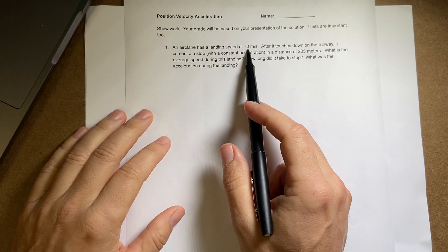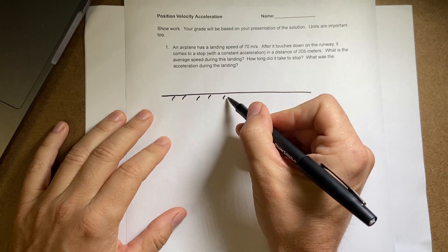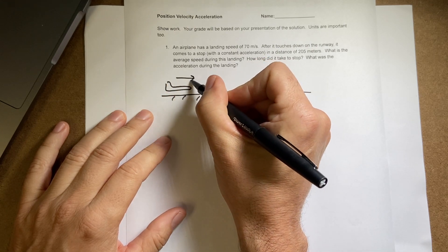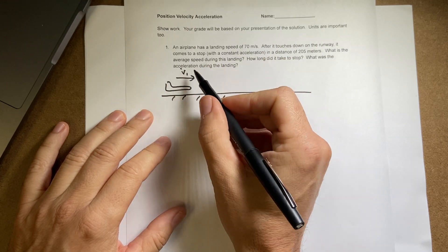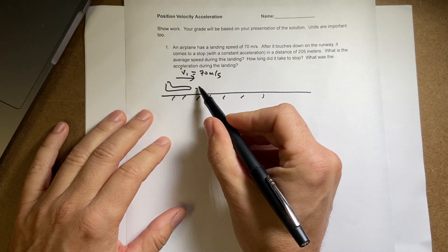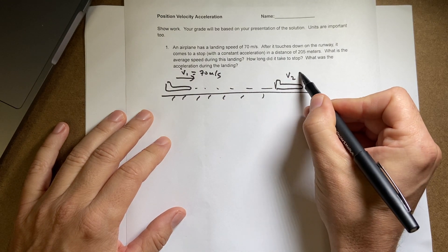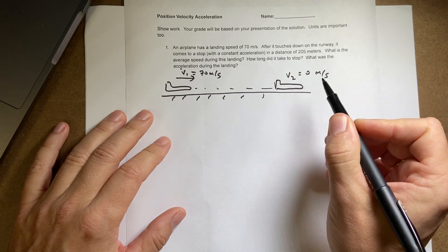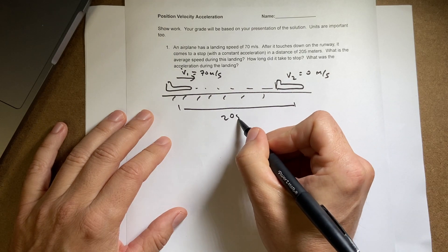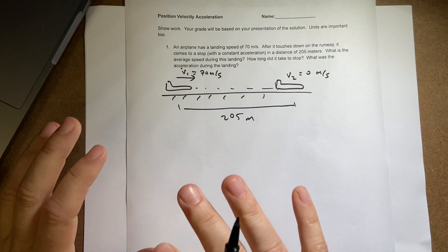Here I have an airplane with a landing speed of 70 meters per second. It's always nice to draw a little picture — it helps you visualize what's going on. So here's my plane going with an initial velocity V1, written as a scalar: V1 equals 70 meters per second. It travels all the way until it stops, so V2 equals 0 meters per second. This distance is 205 meters. Drawing this out helps you see what you're given and organize the problem.